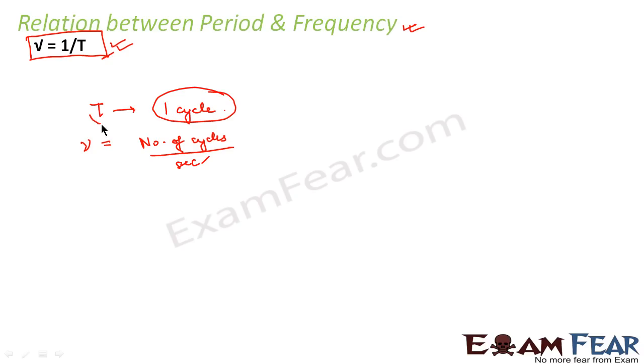When you define time period, it is one. So you can say it is one cycle per time period. So that is what is your frequency.